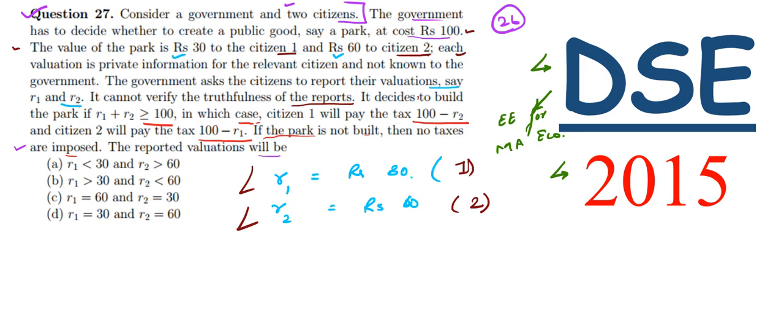Now we need to find the reported valuations. We have R1 and R2. Let's find the value of R1 plus R2. This will be rupees 30 plus rupees 60 which is equal to rupees 90.